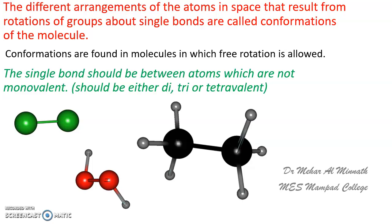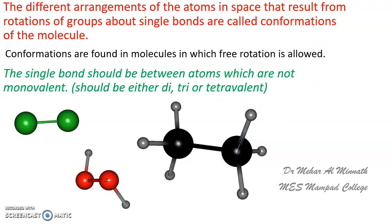Among organic compounds and hydrocarbons, ethane is the simplest molecule which shows conformations. Methane does not show conformations because it does not have a C–C single bond. It has C–H single bonds, but no conformations are possible when the C–H bond is rotated because hydrogen is monovalent. In ethane, the two tetravalent carbon atoms are connected by a bond that can rotate freely, giving various conformations.